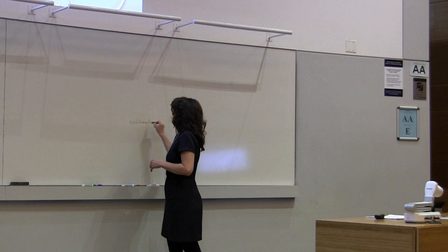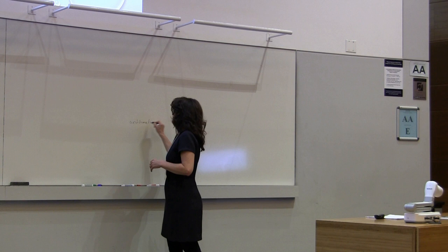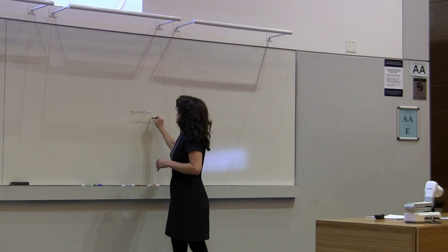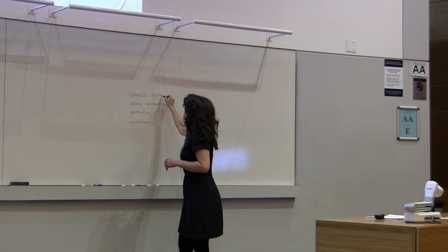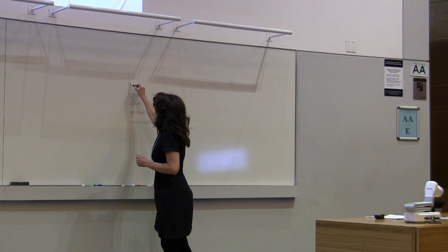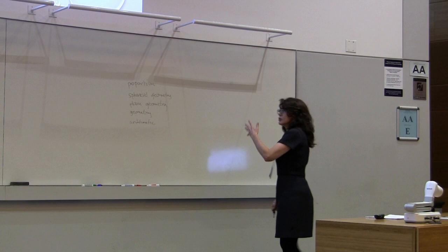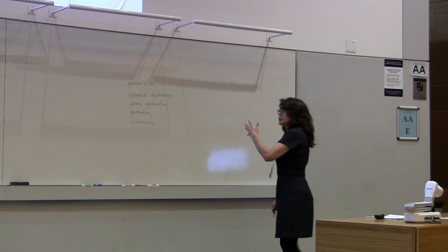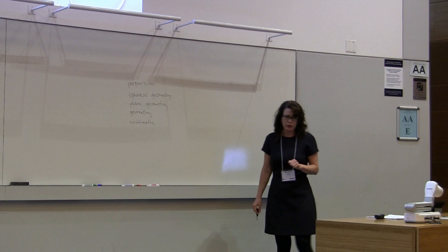We look at the divided line. We're told we start with arithmetic, then go to geometry, then plane geometry, after that spherical geometry — or spherical geometry in motion — and then we end at the theory of proportion. Why is it that Plato organizes the education of the philosopher in terms of these things? What he's quick to point out is that what he means by these is not an empirical thing.